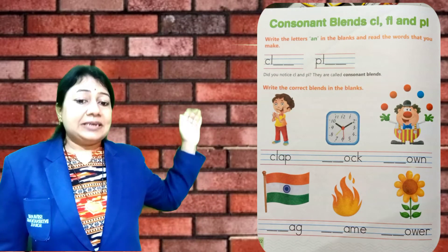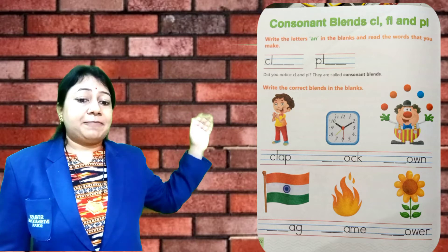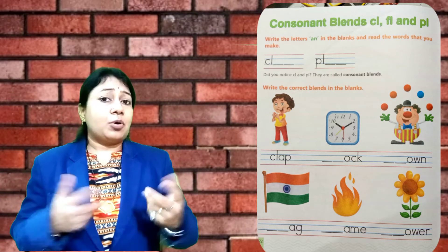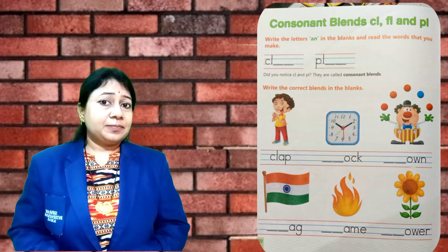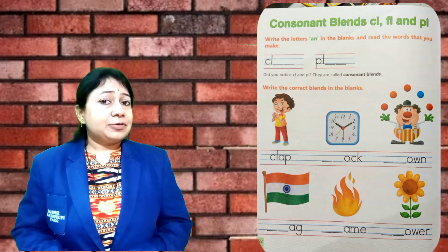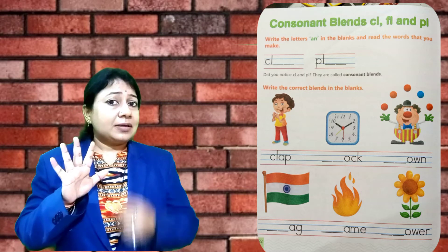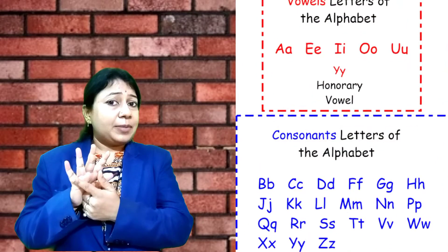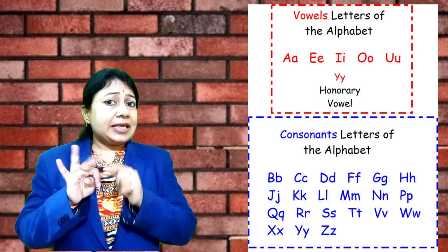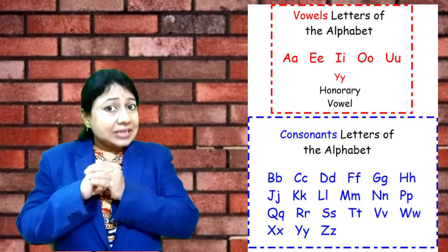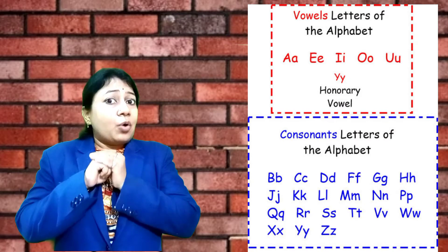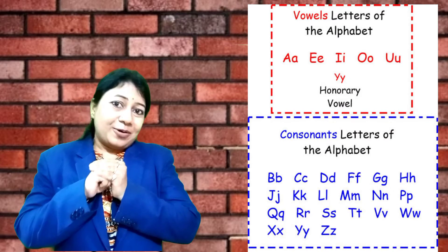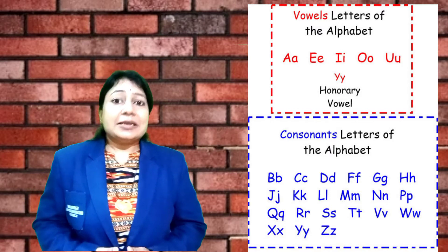Consonant blends — CL, FL, and PL. Tell me, what is the meaning of consonant? Have you seen vowels before? There are five vowels in our alphabet: A, E, I, O, U. Except those, all the other letters are called consonants.